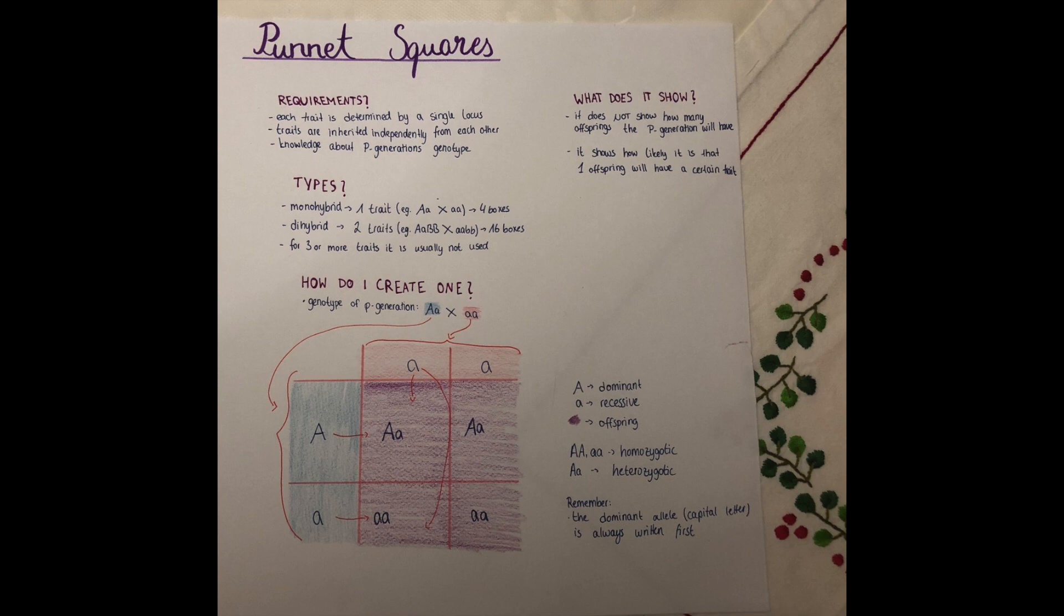Now we come to the question of how can I create a Punnett square. So first of all, I usually make a mark on what is the genotype of the P generation. And then you can put one part of the parent generation on the horizontal top line of the chart and the other one on the vertical left line so that they build the outer border of the chart. And the individual gametes are divided by a line so that they can create each a single box for the chart. Remember, in the monohybrid one we will end up with four boxes, in the dihybrid one with 16 boxes.